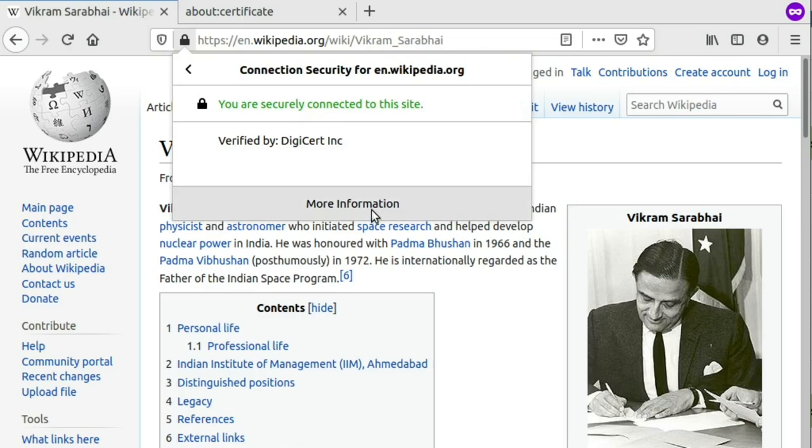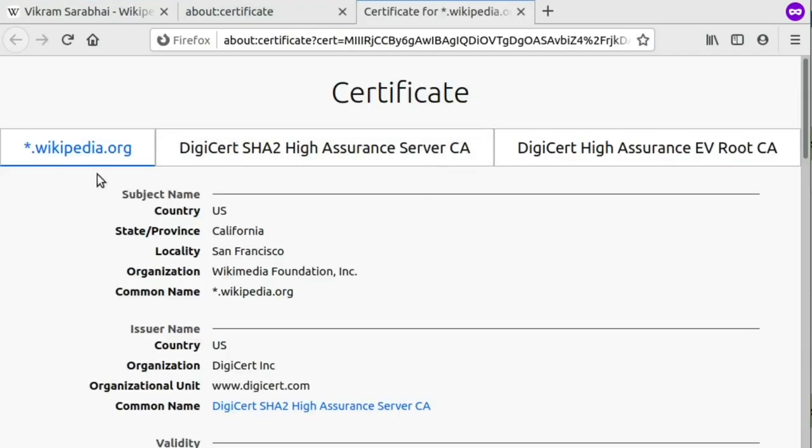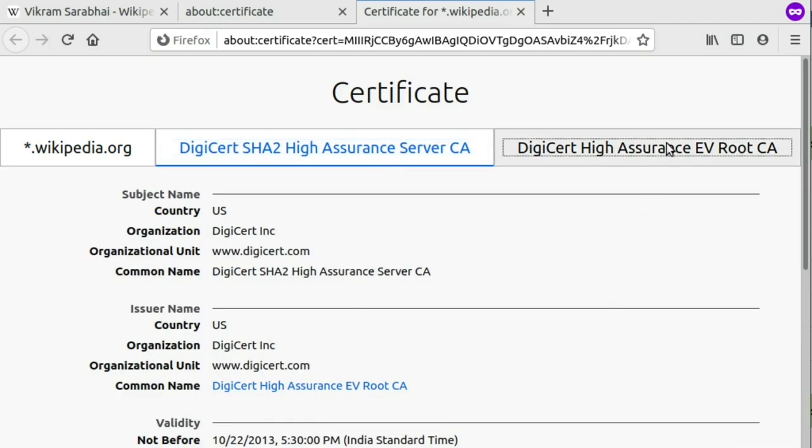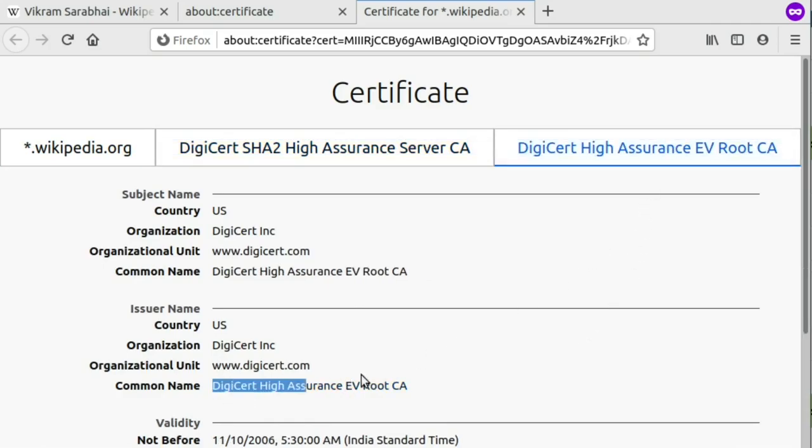When we view the certificate, we see that it is verified by an intermediate CA, DigiCert SHA High Assurance Server CA, which is in turn verified by the main root CA, DigiCert High Assurance EV root CA.